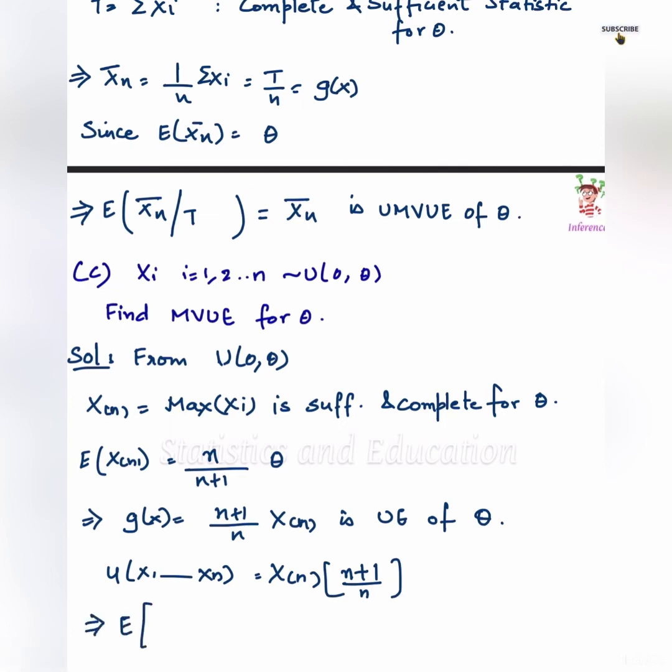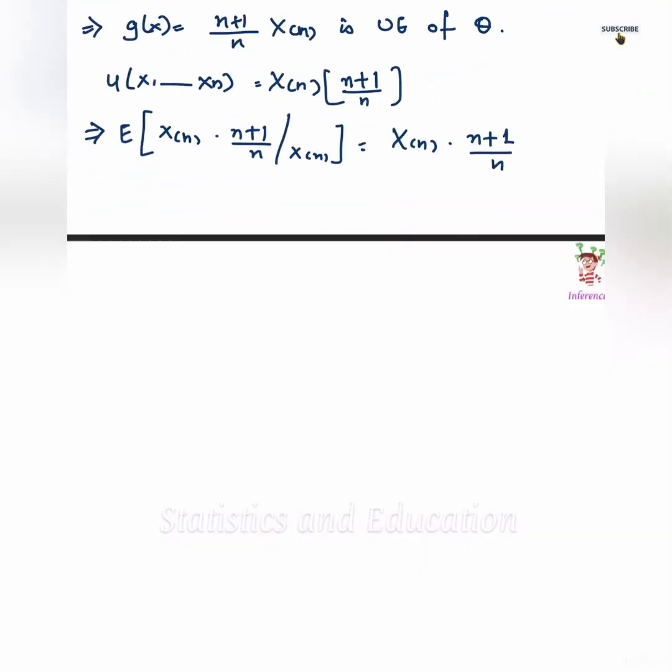If I condition n plus 1 upon n times X(n) upon X(n), we get X(n) into n plus 1 upon n. That is the uniformly minimum variance unbiased estimator.